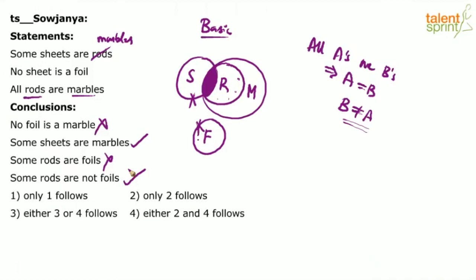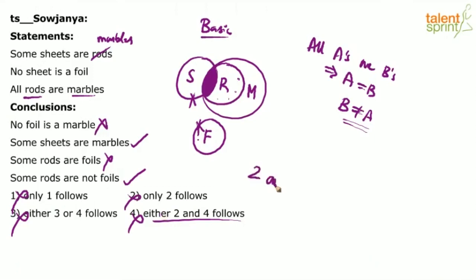So the answer for this question would be only 2 and 4 follow. 1 and 3 do not follow. The fourth option says 'either 2 and 4 follows,' which makes no sense — the answer should simply be 2 and 4 follow.